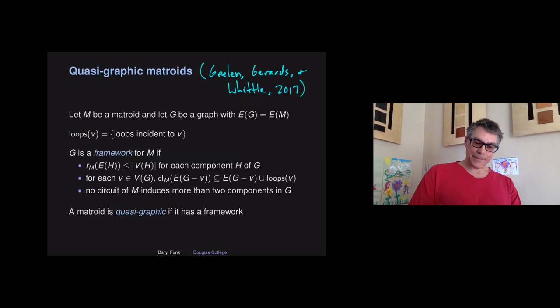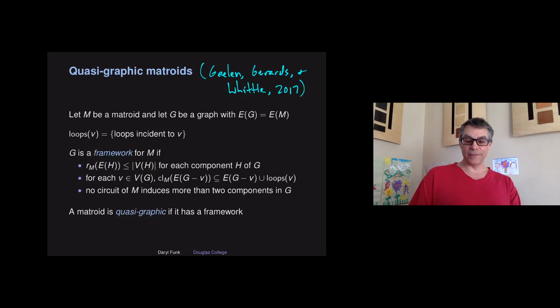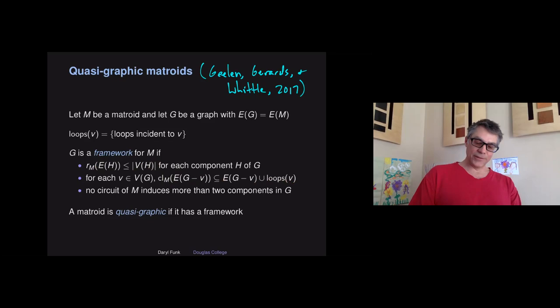So what's a quasi-graphic matroid? These are introduced by Jim Geelen, Bert Gerards, and Jeff Whittle in their 2017 paper. Let M be a matroid, let G be a graph with the same edge set as the ground set of M. We say G is a framework for M if: the edge set of every component has rank in the matroid at most the number of vertices in the component; every time you delete a vertex along with its incident edges and take the closure of the resulting edge set, you don't pick up any more elements aside from possibly loops at that vertex; and no circuit of the matroid induces more than two components in your graph. A matroid is quasi-graphic if it has a framework.